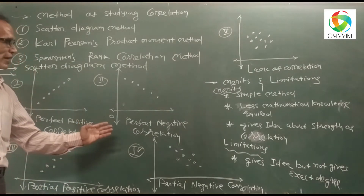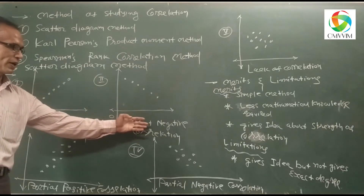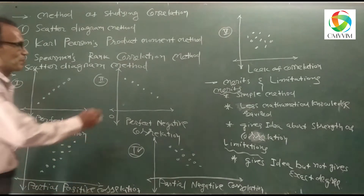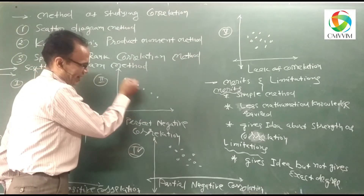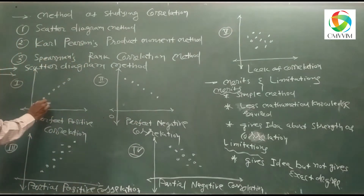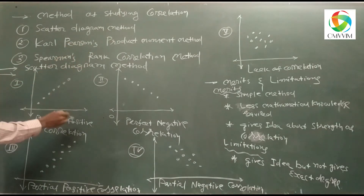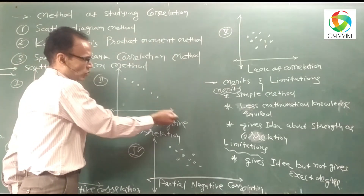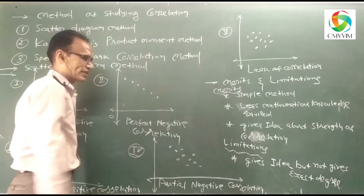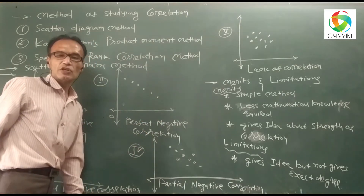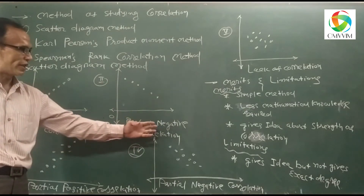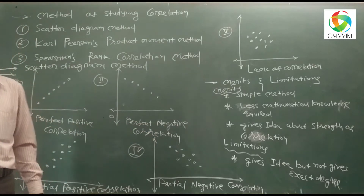For two variables, points are plotted on graph paper with x on the x-axis and y on the y-axis. If the figure obtained shows all points in one straight line but going from left to right in decreasing order, this figure shows that there is Perfect Negative Correlation between the two variables.